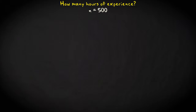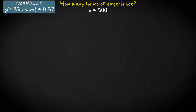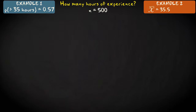Suppose you find that in your sample of 500, a proportion of 0.57 has more than 35 hours of diving experience, and the mean number of hours of experience is 35.5. The standard deviation is 8. In our sample, the distribution of the variable hours of diving experience is approximately normal.